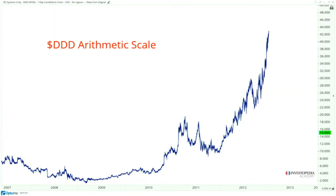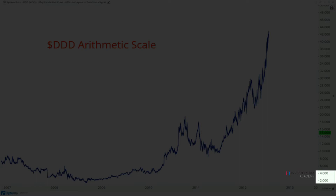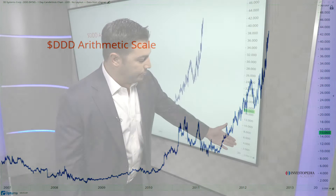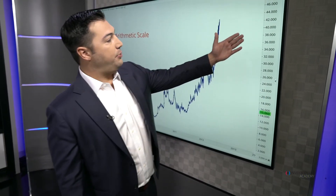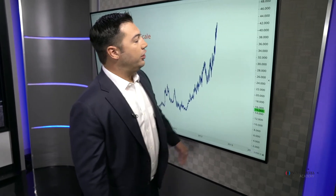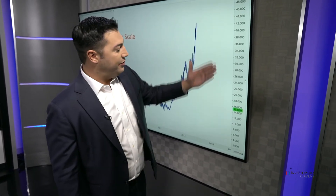On the arithmetic chart you can see how on the y-axis the difference between 2 and 4 is the same distance as it is from 40 to 42, although the percentages are much different. From 2 to 4 you're looking at a 100% change, while from 40 to 44 you're looking at only a 10% change.